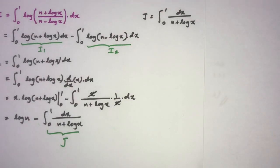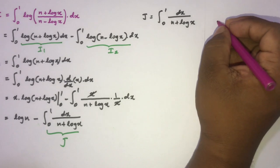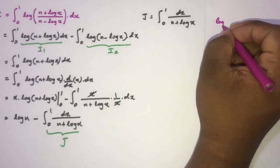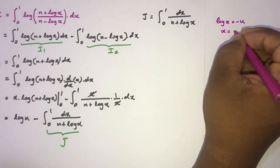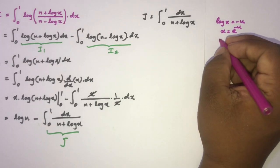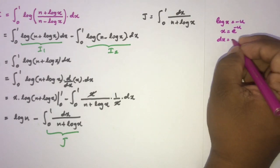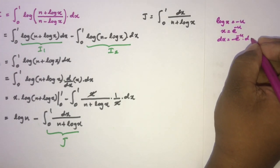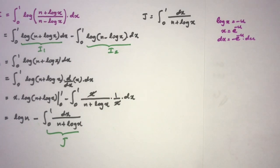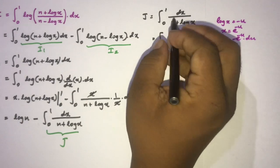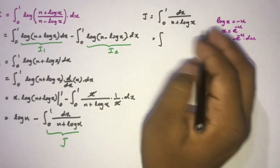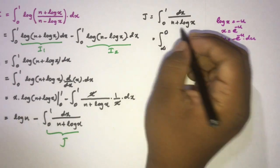To evaluate J, we use a substitution. Let natural log of x equal negative u. Then x equals e to the minus u, and differentiating gives dx equals minus e to the minus u du. Now we plug in. The limits transform: when x goes from 0 to 1, u goes from infinity to 0.